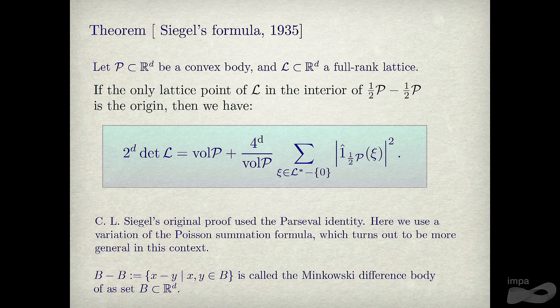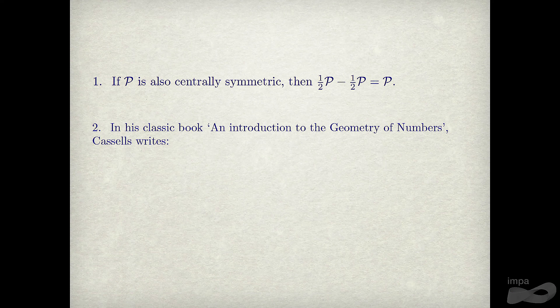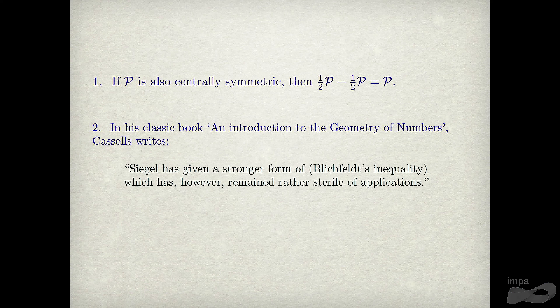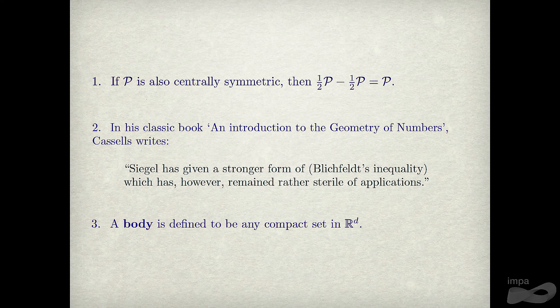The difference body — which Gugu also talked about — is important here. It's a basic exercise that one-half P minus one-half P equals P if and only if P is convex and essentially symmetric. Notably, in the classic book on geometry of numbers, Castles wrote that Siegel gives a stronger form of Minkowski but one that has 'remained rather sterile of applications.' We want to change that.